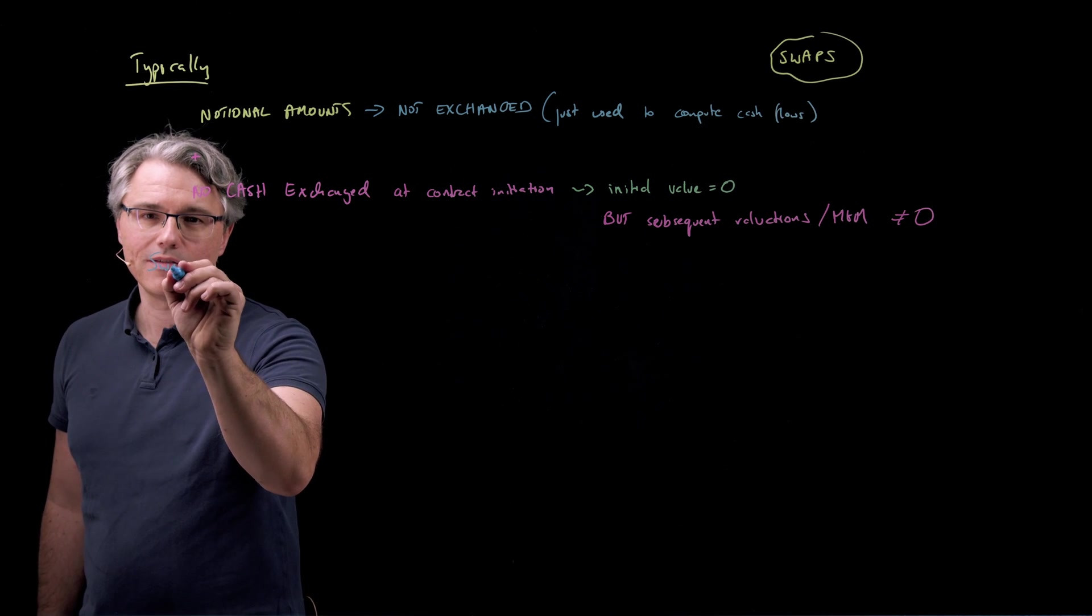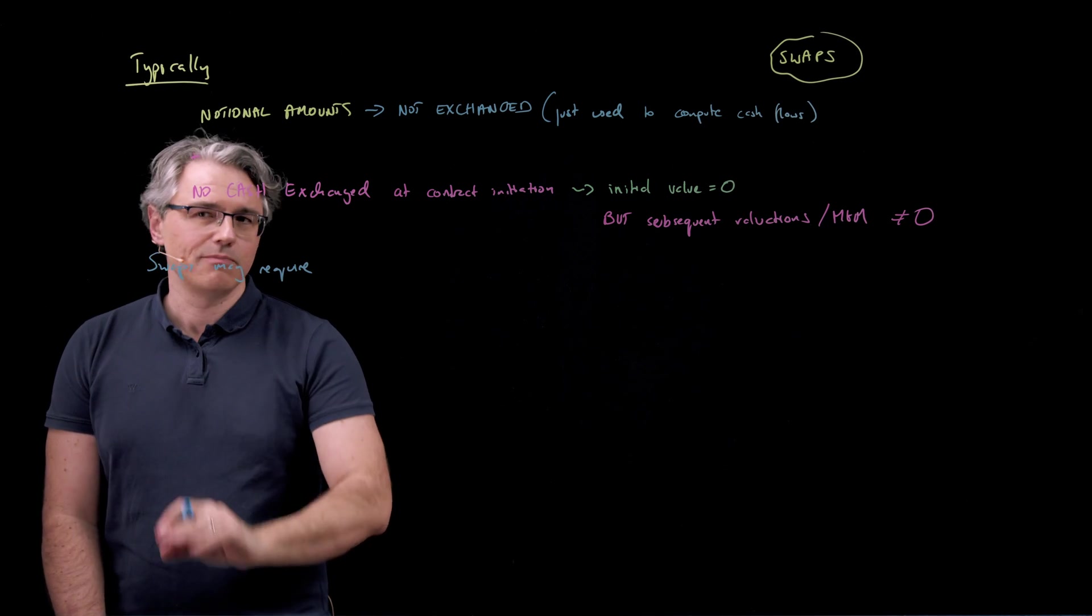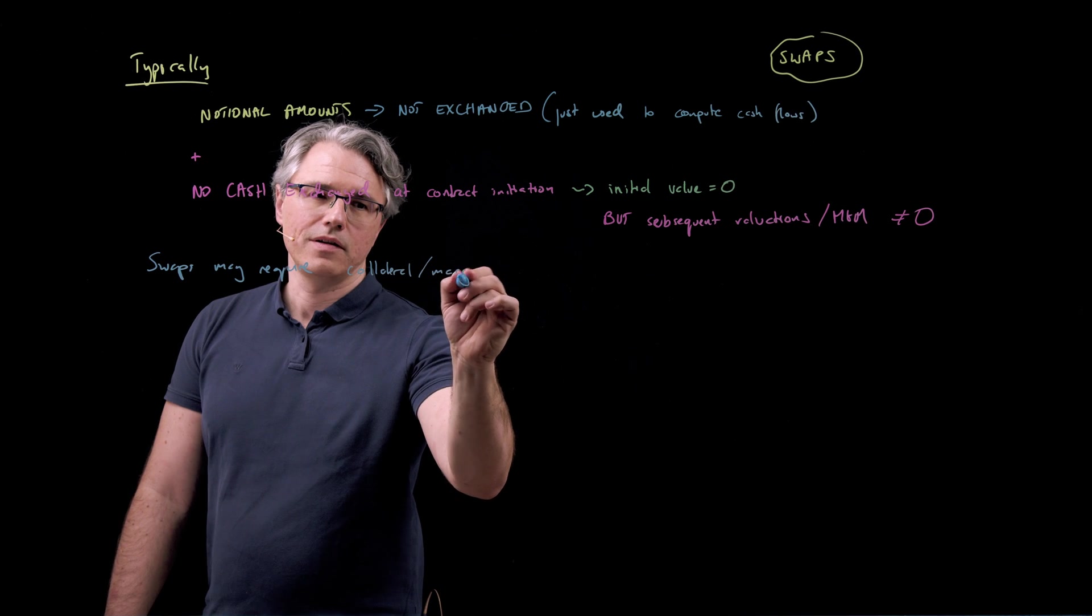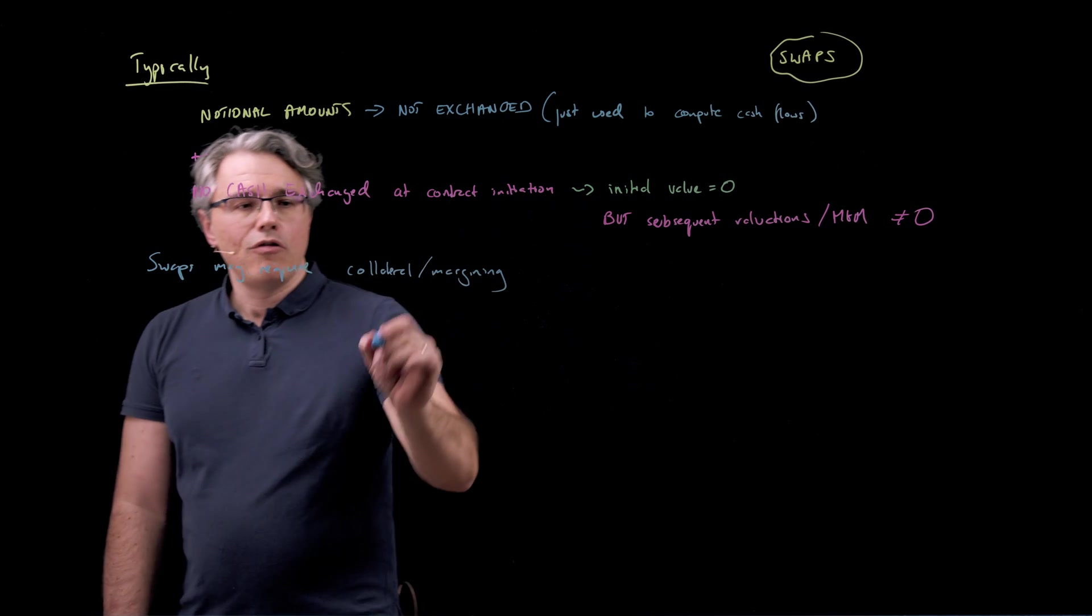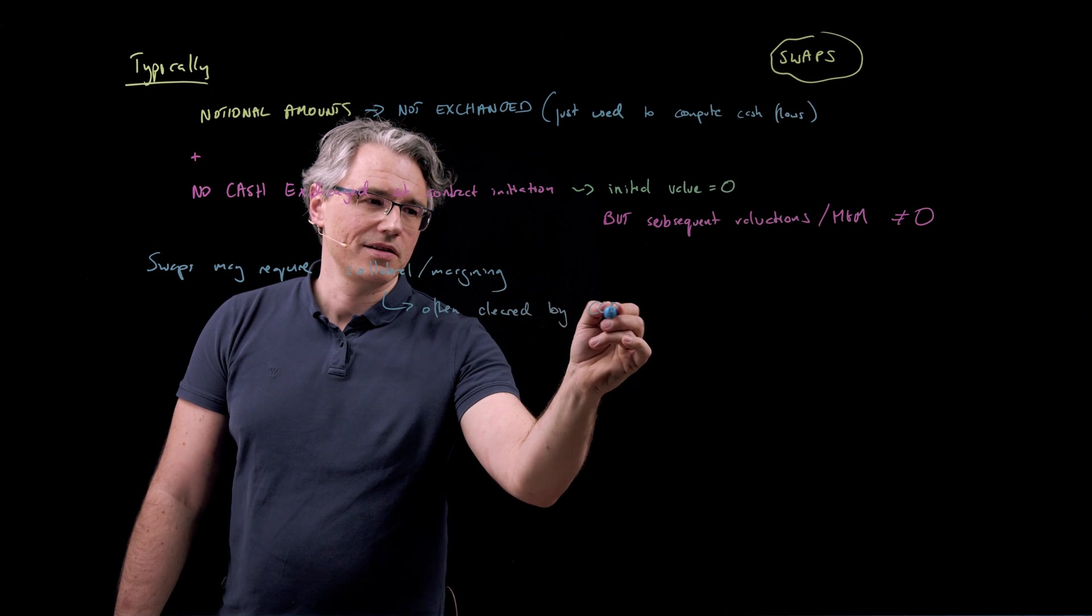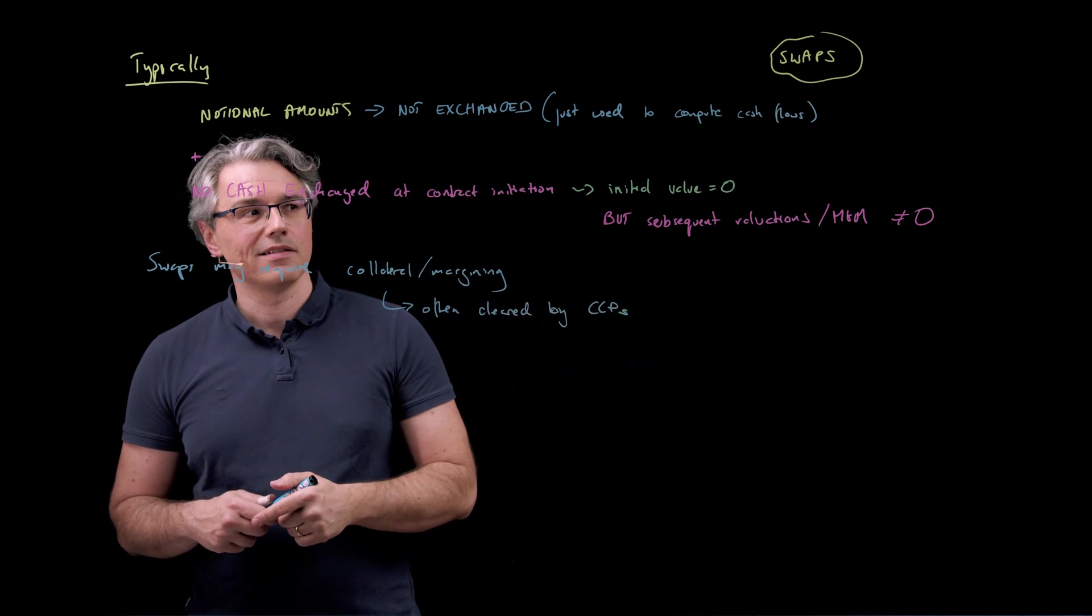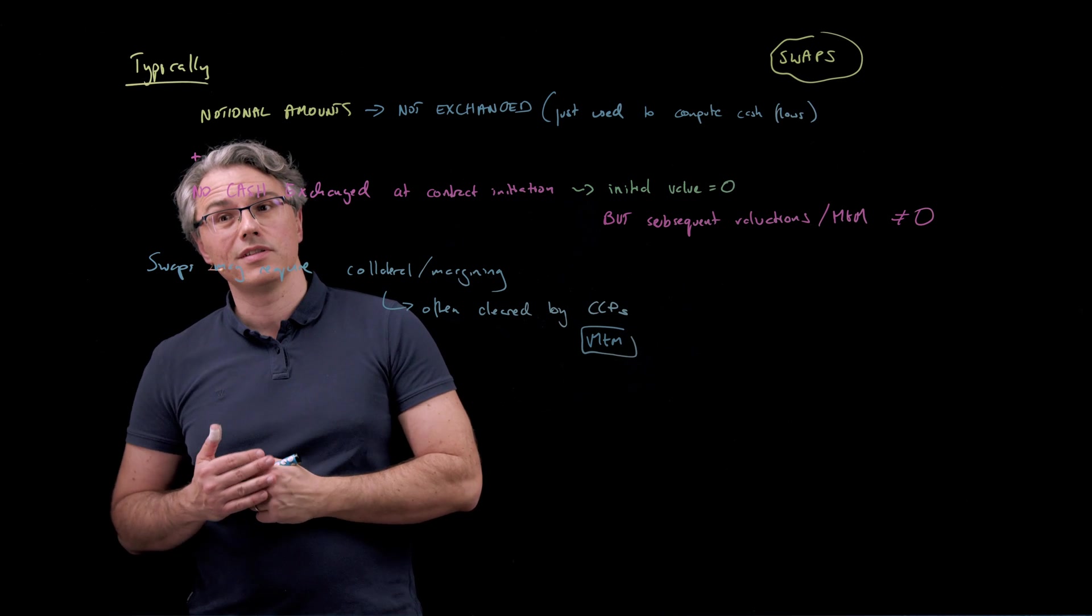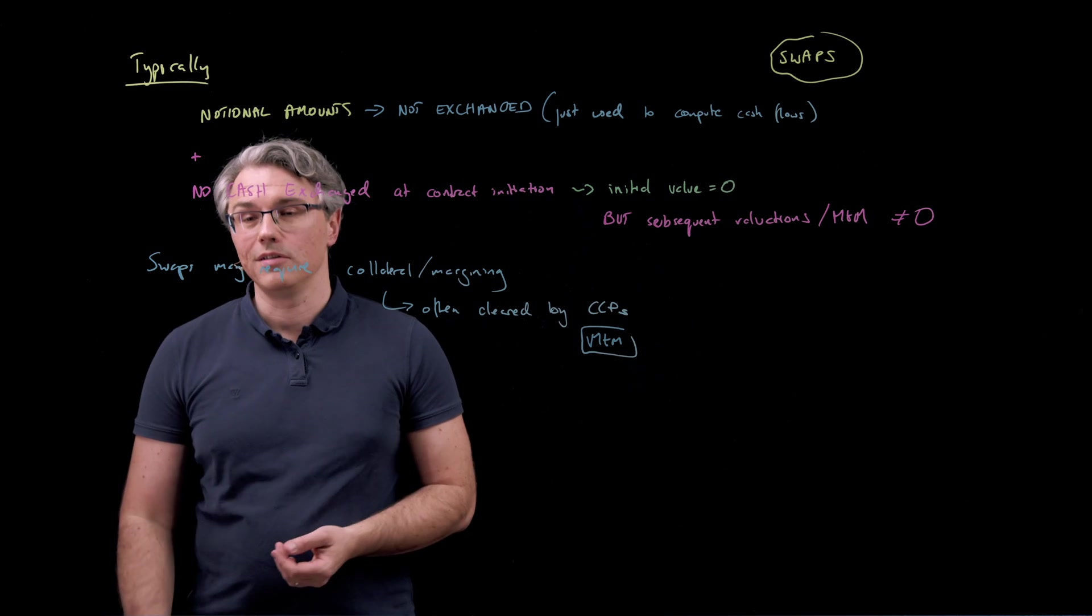And let me just state something that I may have mentioned before. Swaps may require, that's what your curriculum states, this is becoming more and more the case, collateral/margin. So margining which is basically the posting of collateral, they are often these days cleared by CCPs, so central counterparties. This obviously reduces the counterparty risk, but it also introduces that whole concept of MTM, mark to market. So you're going to have initial margin being posted, but then subsequently valuations which may result in margin calls and the posting of variation margin as well.